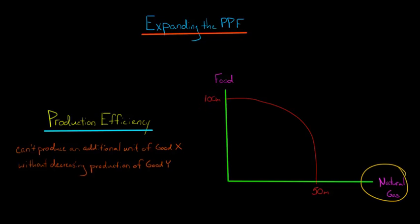But if it strictly produced natural gas, it would end up with 50 million tons of natural gas. And we know that all the points along this line are efficient in production. This is our PPF curve.